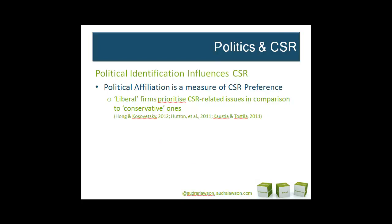Political affiliation is a natural measure of preferences for social responsibility. In the US, for example, the Democratic Party platform places more emphasis on CSR-related issues such as environmental protection, anti-discrimination laws, affirmative action, employee protection, and helping the poor and disadvantaged. A 2007 National Consumer League survey found that 96% of Democrats believe that Congress should ensure that companies address social issues, compared to just 65% of Republicans. In addition, Hong and Kosovovsky show a very significant difference between Democratic and Republican investment managers in their portfolio holdings on socially responsible companies.